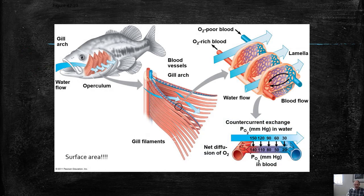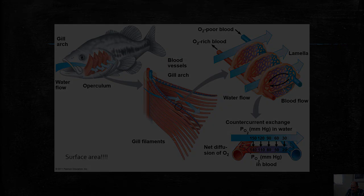I'm going to stop this video here and pick up with how fish accomplish gas exchange in this low-oxygen environment. Remember, the air has a lot more oxygen than the water. So how is it that a fish can get enough oxygen to survive in an aquatic environment? That's where we'll pick up in the next video.